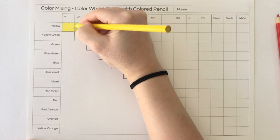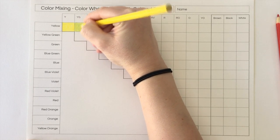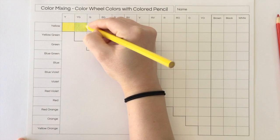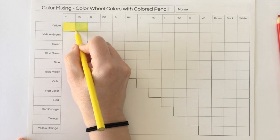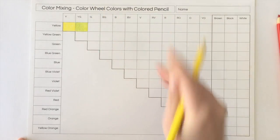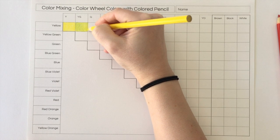And then I always go back over it with the color that I'm using, the original color, and just kind of blend that in, make it a little darker, make sure everything is even. And then I would move on to green.